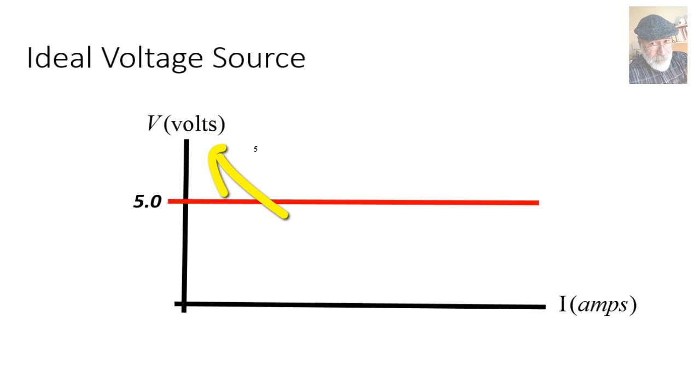Hmm, this deserves some additional explanation, right? Let's go into graphics. Here is a voltage versus current plot. An ideal 5V voltage source would have this perfectly horizontal and infinite linear characteristic. See, at any current, the voltage is always 5V.